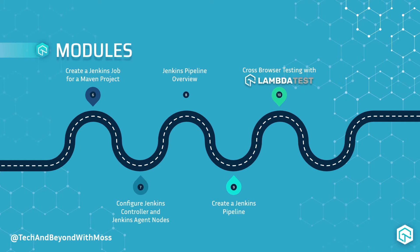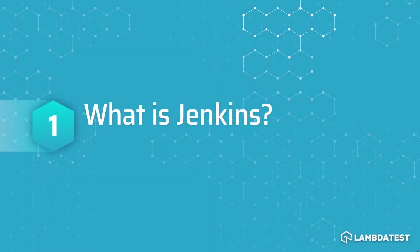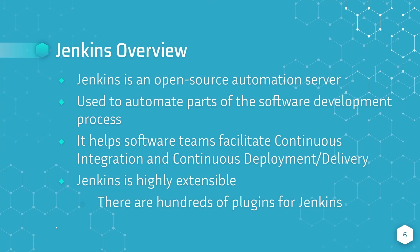Now that you know what we're going to cover in this series, let's get started with the first topic: What is Jenkins? Jenkins is an open source automation server and we use Jenkins to automate certain steps in the software development process. Jenkins helps software teams facilitate continuous integration and continuous deployment or delivery.